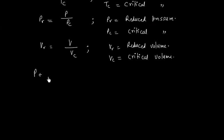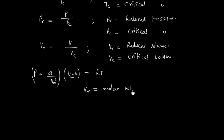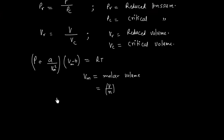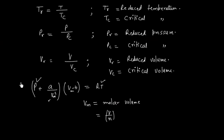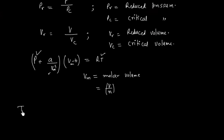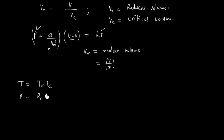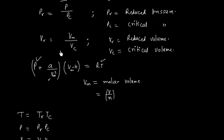Now we can write the Van der Waal equation as (P + A/VM²)(VM - B) = RT, where VM denotes molar volume, that is V divided by N. We can replace pressure, volume, and temperature in terms of reduced constants and critical constants. So temperature equals TC times TR, pressure equals PC times PR, and volume equals VR times VC. This volume is the molar volume.